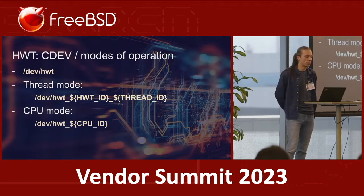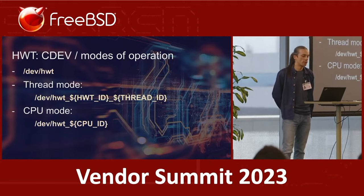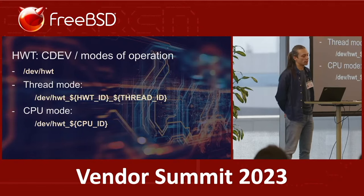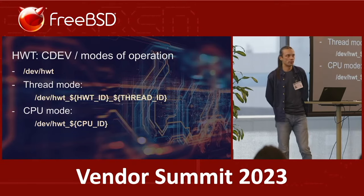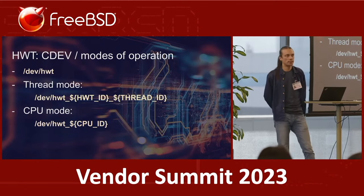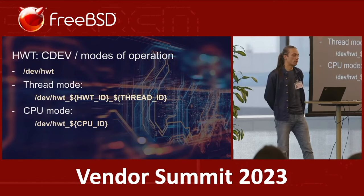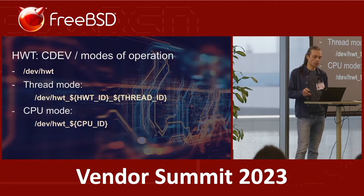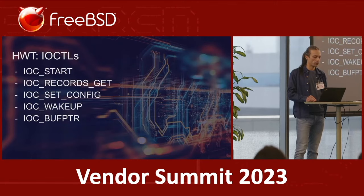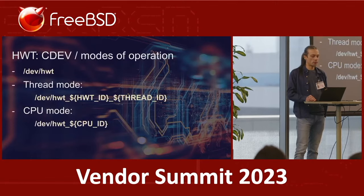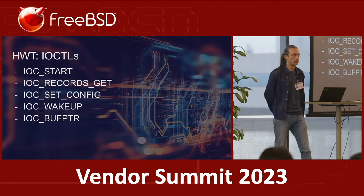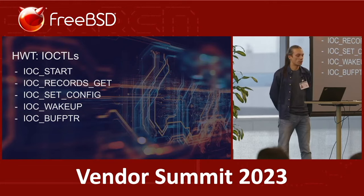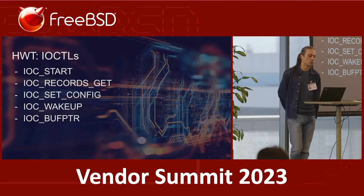There are two modes of operation, similar to HWPMC. Thread mode allows tracing any given application in user space, including any particular thread of the application — identified by a unique kernel thread ID. CPU mode traces CPU activity in kernel mode; a new character device is created as hwt_cpu_<CPU_ID>. You can enable tracing for all CPUs, though that will generate a lot of data. Once this character device is created, you can memory-map the buffers into user space.